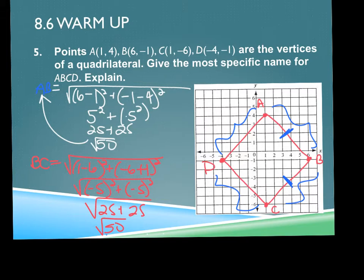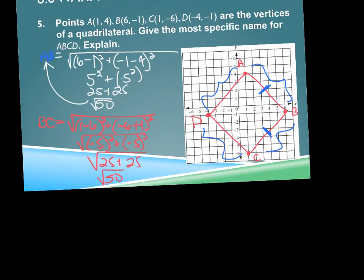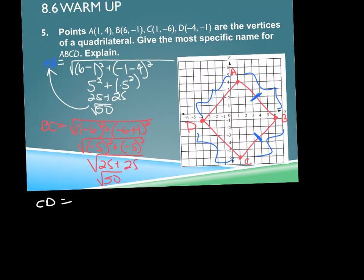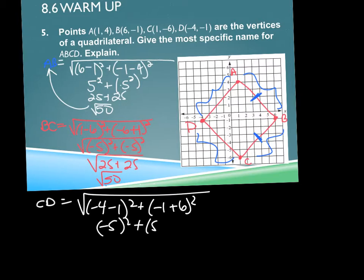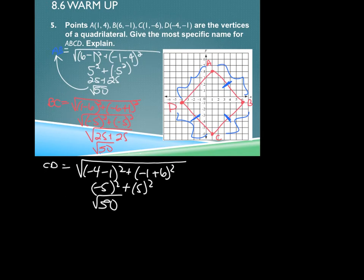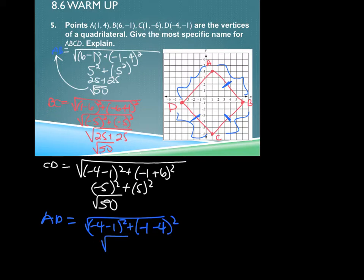There are a lot of different ways to do this. If I had proven the opposite sides were parallel using slope, I would have known it's a parallelogram. And then with consecutive sides congruent, I could have already shown this as a rhombus. But we think more specifically this is a square, so I'll keep going. CD: √((-4-1)² + (-1-(-6))²) = √((-5)² + 5²) = √50. And AD: √((-4-1)² + (-1-4)²) = √((-5)² + (-5)²) = √50. So now I have four congruent sides — this is at least a rhombus.